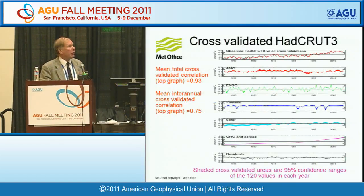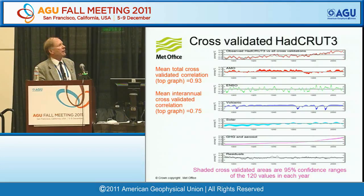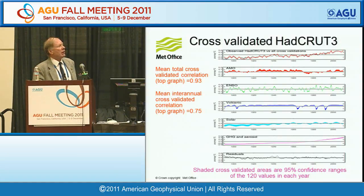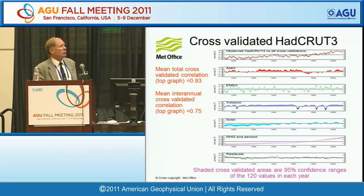We get the 120 regression coefficients for each predictor for each year and for the unexplained residuals. This is the result for HADCREW T3. The 95% confidence limit is very low for the whole series, but if you look at blown-up scales, the AMO shows quite a lot of uncertainty in the middle part of the century. The solar uncertainty is quite low in the last 50 years but higher early in the century because of the collinearity between solar and greenhouse gases. The residuals are nearly white noise, except in the Second World War period where we know there are data problems.